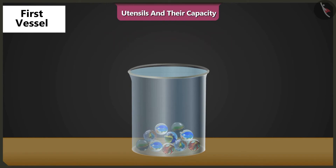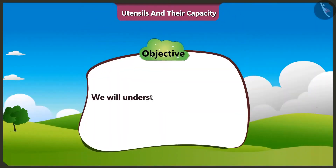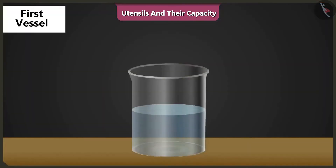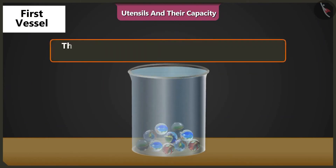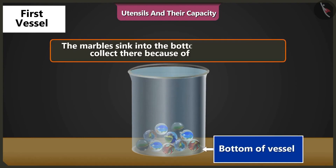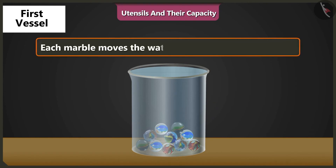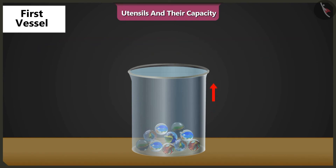Come on, I will explain. Today, we will understand how water level rises in a vessel when we drop objects in it. Mishtu, when we drop the marbles in a vessel half filled with water, the marbles sink to the bottom of the vessel and get collected there due to their weight. As a result, the water comes up. When marbles are dropped in the water, each marble moves the water upwards due to its weight. That brings the water upwards and the water level rises.